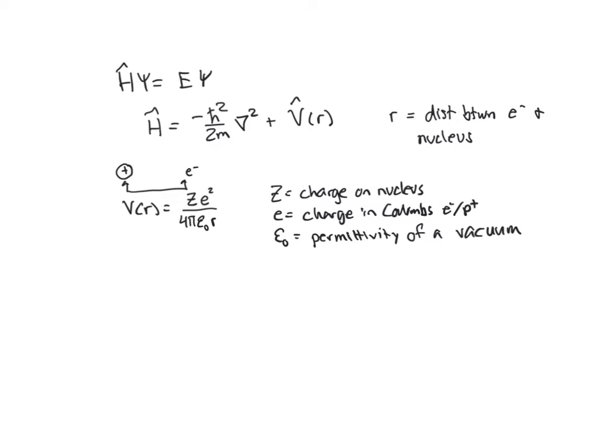So if we think about what this looks like, the potential is proportional to 1 over R, the distance between the proton and the nucleus. And so as R gets bigger, this is going to get smaller. And the charge on the electron is negative, the charge on the proton is positive. And so this whole thing is going to be negative, so all the potential energies are going to be negative.